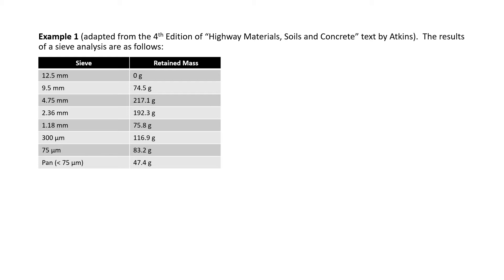For example, for the 12.5mm sieve size, the entire soil sample fell through, so nothing was retained. For 9.5mm, 74.5 grams was retained while the remaining fell through. Typically what happens when we obtain results like this in a lab is we determine the passing proportion and we plot the passing proportion against the sieve size, or the diameter of the particle size. This gives us a grain size distribution curve, which then tells us what kind of soil sample we have.